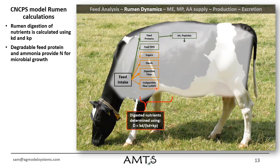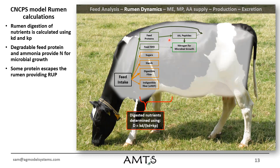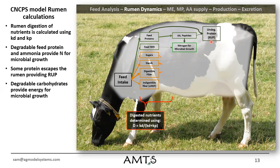On the protein side, the digested protein goes to amino acids and peptides, which can contribute to the pool of available nitrogen for microbial growth. The undegraded portion of those feed proteins bypasses — or really just escapes the rumen — and it adds to the undegradable protein pool or RUP pool. On the carbohydrate side, the digested portion of the carbohydrates — coming only from sugars, starch, and digestible fiber, nothing from the indigestible fiber — provides VFA and energy for microbial growth.